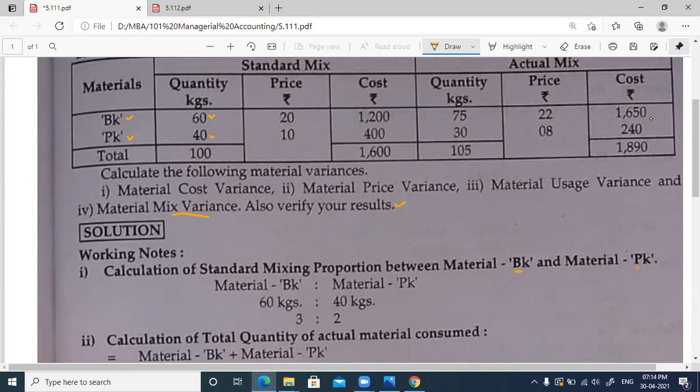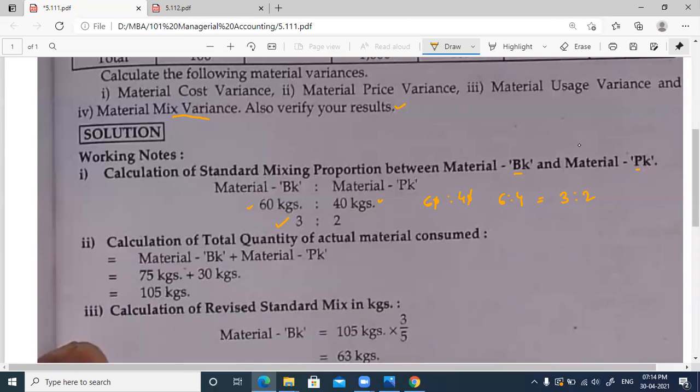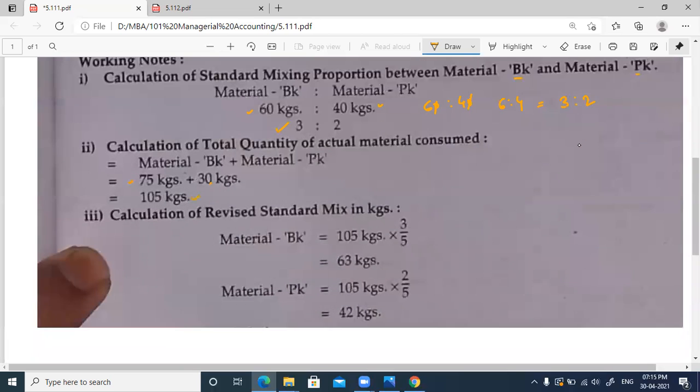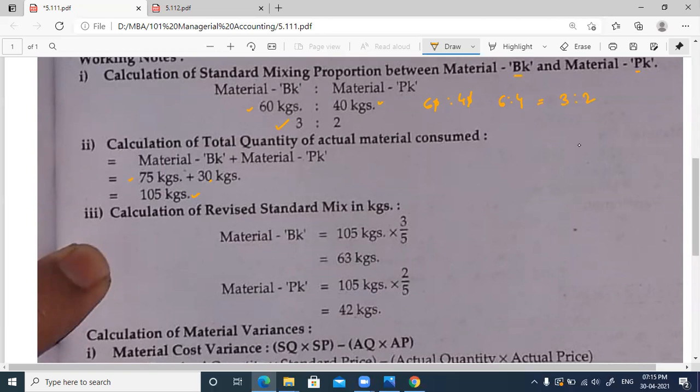There are two materials used: BK and PK. We have a standard mix ratio for BK and PK. With the actuals, we have 75 and 30, totaling 105 kgs. The standard ratio is 3 to 2. To calculate the revised standard mix: 105 into 3 by 5 and 105 into 2 by 5.